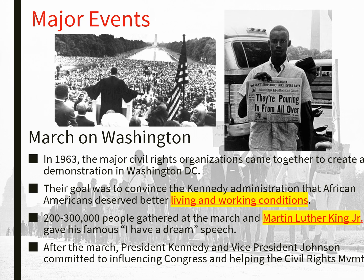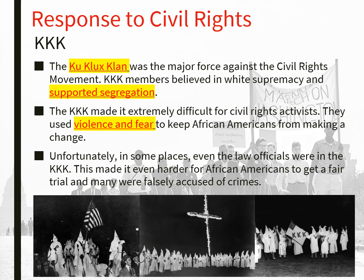There were also some really terrible things that came out of the civil rights era. After the Civil War, we got the KKK — the Ku Klux Klan. They were a major force against the civil rights movement: a group of white supremacists who supported segregation and were domestic terrorists. They would bully and target Black Americans, and even white Americans who disagreed with them. They used violence and fear to keep African Americans from making change. During elections, they would stand outside and intimidate Black voters. In some places, even law officials were in the KKK, which made it even harder for Black Americans to get a fair trial, and many were falsely accused of crimes they had not committed.